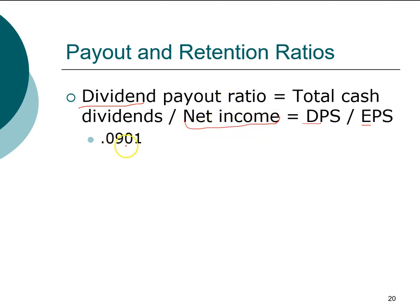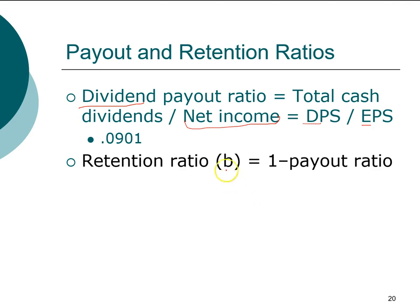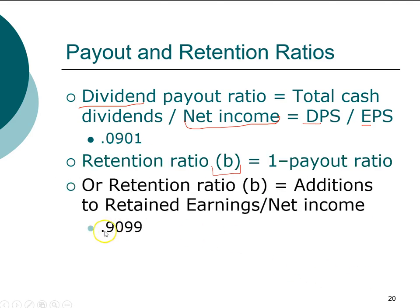A ratio closely related to the dividend payout ratio is called the retention ratio. The textbook uses the letter B to represent the retention ratio. The retention ratio is defined as one minus the payout ratio. In our example, the retention ratio is 1 minus 0.0901. In other words, for every dollar of income, the company pays out nine cents in dividends and retains 90.99 cents for reinvestment — a very high retention ratio, though not exceptional. We have to look at the age of the firm and the industry to see how common this dividend practice is.